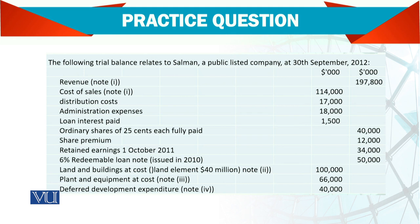Note number one means there is no adjustment yet. Cost of sales, again note number one — still no adjustment needed. We will look into these notes later. Distribution cost, administrative cost, loan interest paid.